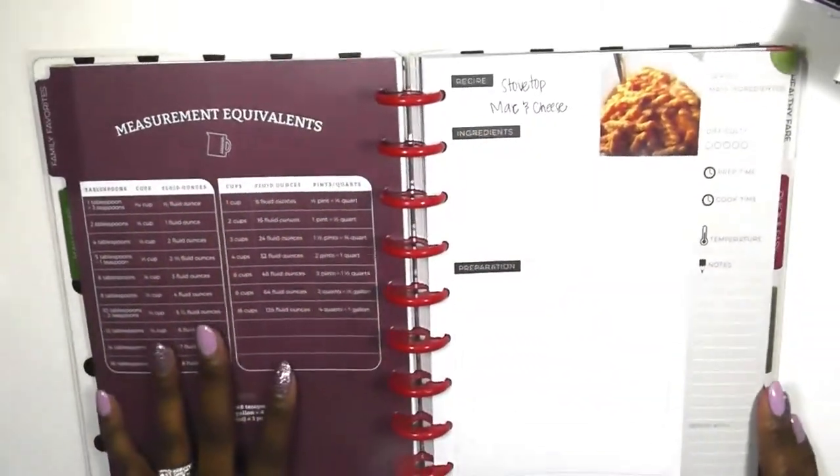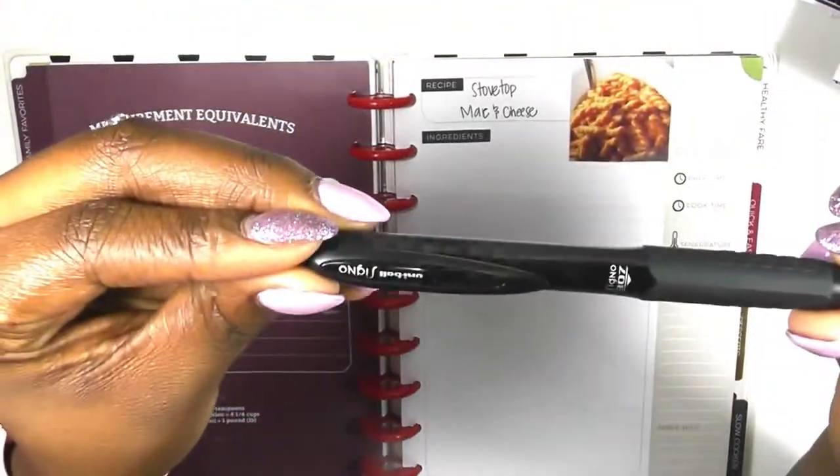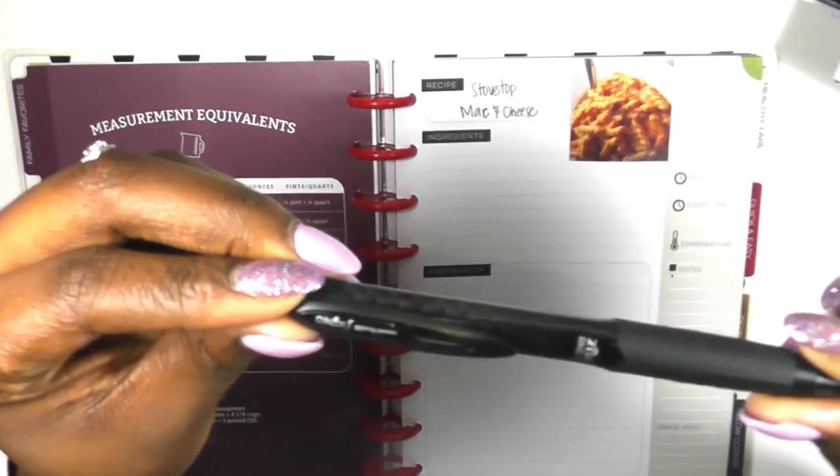Then I'm going to name it, and this is stovetop mac and cheese. I'm using a couple of different pens in here, but this is the Signo Uniball pen, Signo 307, and I absolutely love this pen. It's one of my favorites.